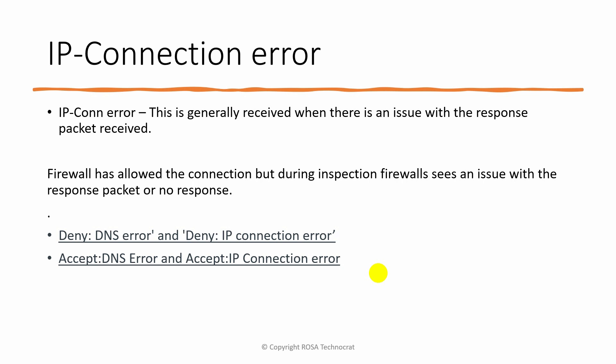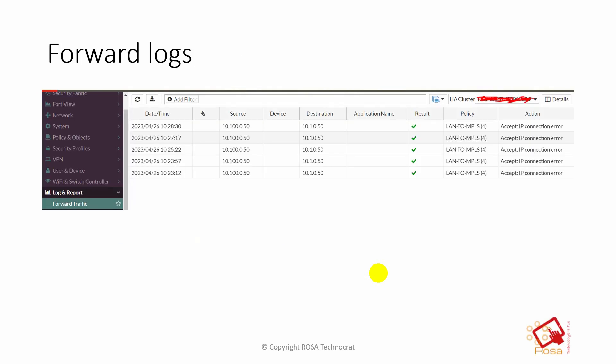Similarly, you may see 'accept DNS error' or 'accept IP connection error' in your FortiGate logs. Whenever it shows 'deny,' the administrator thinks the firewall has denied the packet — but no, 'deny' is when there is an issue with the response packet itself. 'Accept' with IP connection error is when there is no response at all.